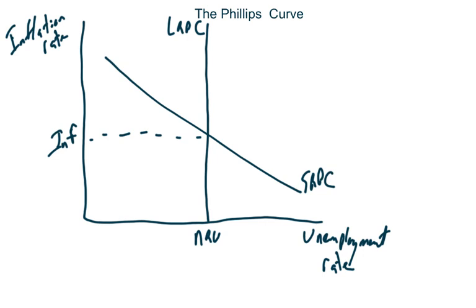We're going to start with the long-run Phillips Curve. We need to think of the long-run Phillips Curve as being really similar to the long-run aggregate supply, which is also really similar to the PPC. There were three things that affected the PPC, and those same three things will affect the LRPC as well.